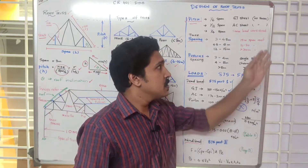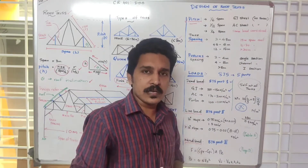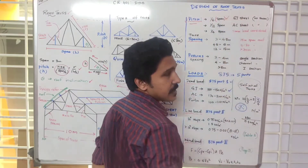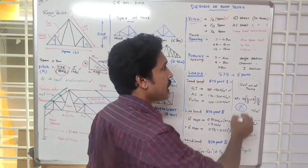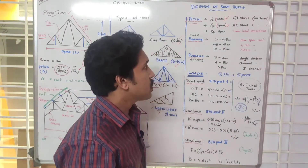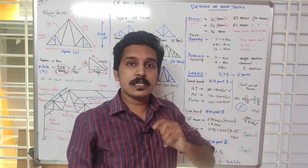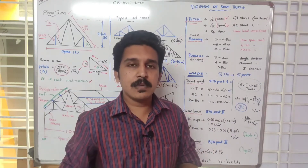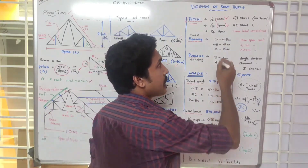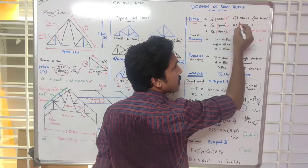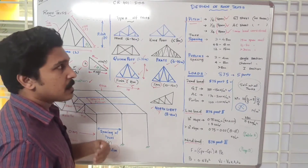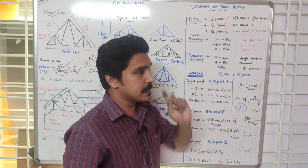If we assume a GI sheet is provided, we use a pitch of 1/6 of the span. For an asbestos cement sheet, the pitch is 1/12 of the span. In areas with snow load, such as in North India, the pitch increases to 1/4 of the span. Using the rise and span, we can calculate the pitch value for the truss design.